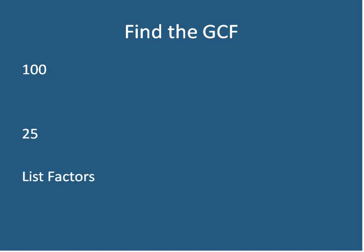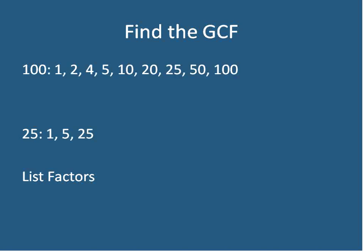Let's find the greatest common factor between 100 and 25. List all the factors: factors of 100 are 1, 2, 4, 5, 10, 20, 25, 50, and 100 — lots of them. The factors of 25 are 1, 5, and 25. They do have 5 in common, but 25 is the greatest common factor — it's the largest factor that is common between both of these composite numbers.